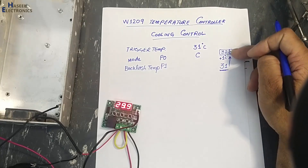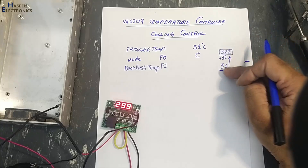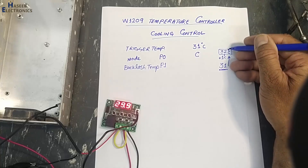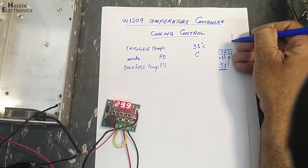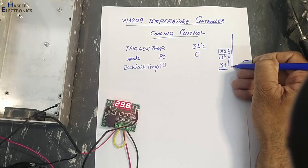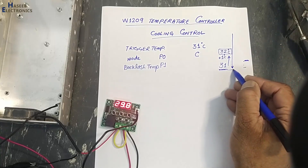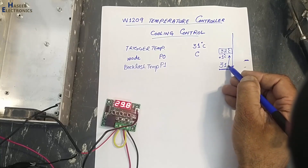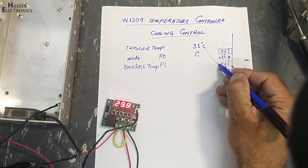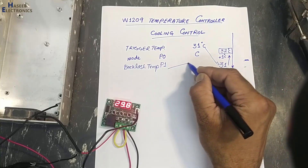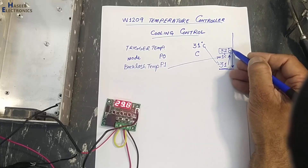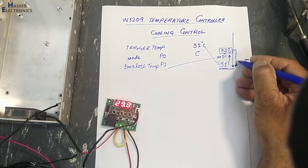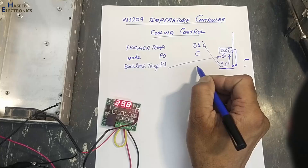When the temperature increases from 31°C to 32°C, it will start the compressor, blower, or fan to decrease the heat. When the temperature decreases back to 31°C, it will disconnect the fan or compressor. When it rises again to trigger plus backlash temperature, it will activate cooling again — so this cooling cycle keeps running.